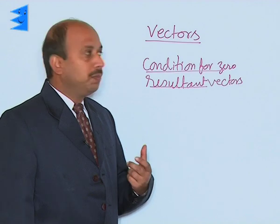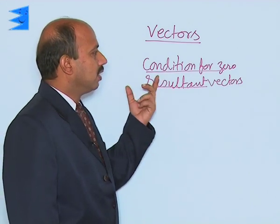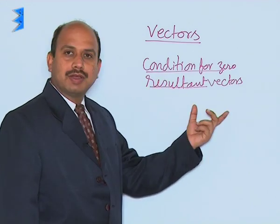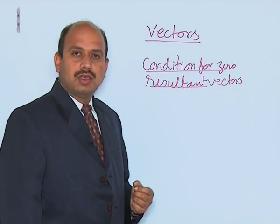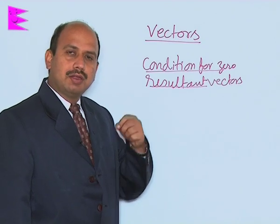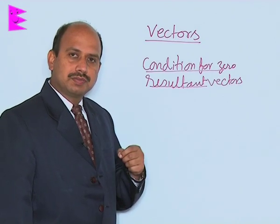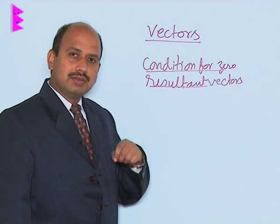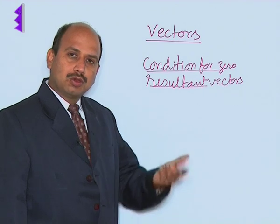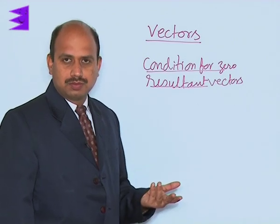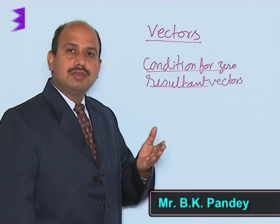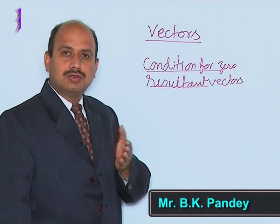Now, see next topic under vectors: condition for zero resultant vectors. If there are 3 vectors acting at a point and represented by the 3 sides of a triangle taken in the same order, then their resultant is 0.